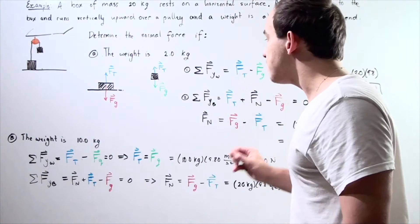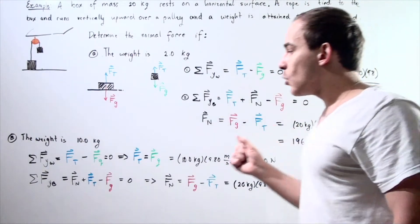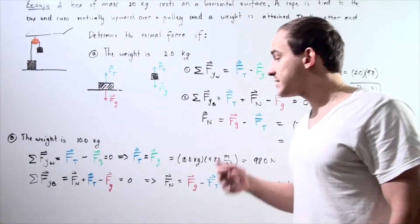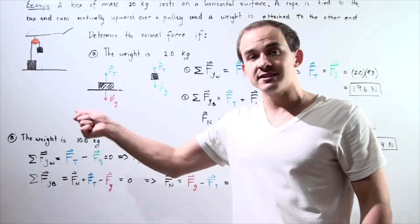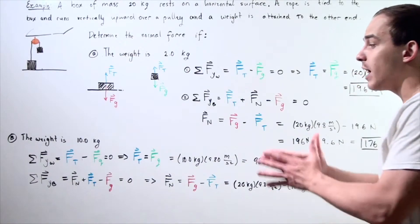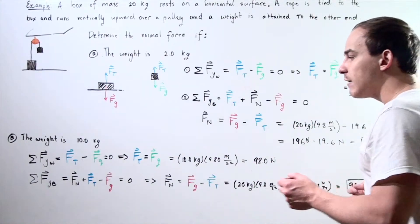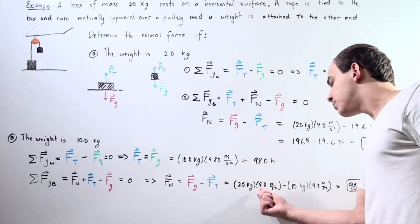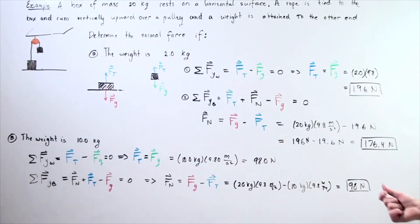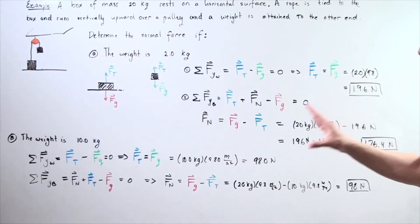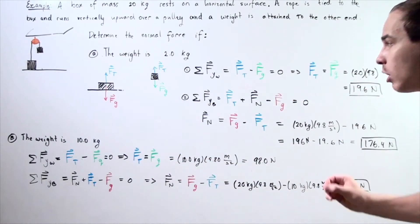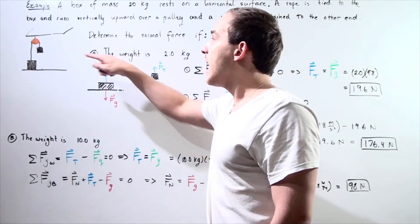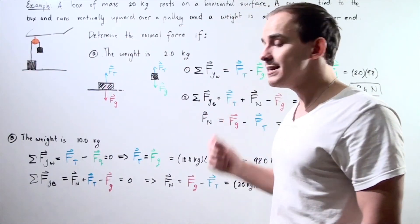Now we set up the same equation as in part A, summing forces along the y-axis on the box: normal force plus tension minus gravity on the box equals zero. Rearranging, the normal force equals 20 times 9.8 minus 10 times 9.8, giving us 98 newtons. In part B, the normal force is smaller because the tension is larger, due to the greater mass of the hanging object.